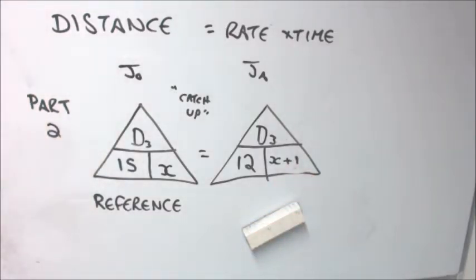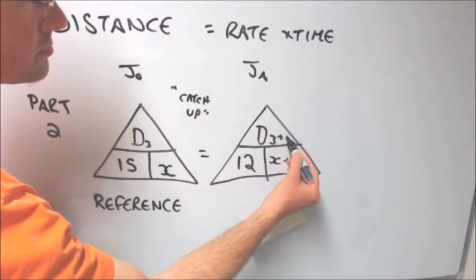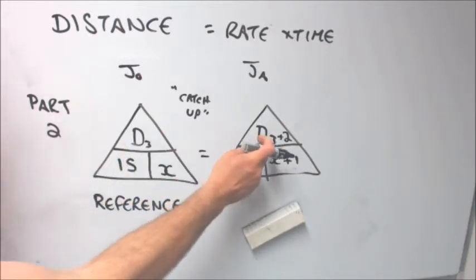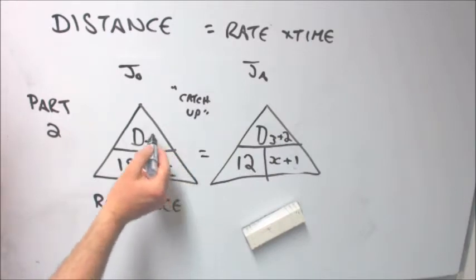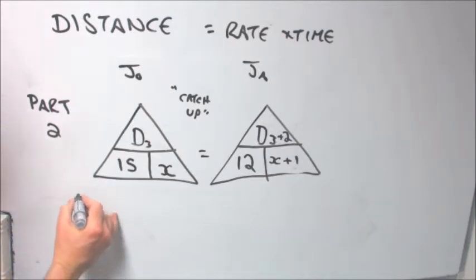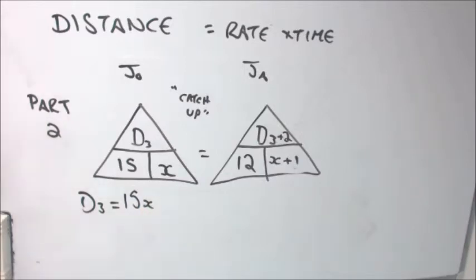He travels for, during part two of the story for one more hour and he's caught up those extra two miles and you must add that to the distance for part two. So the reference point, yes, is John, but we've divided the question into part one of the story and part two of the story. And that's the easiest way to handle this type of very high level on the GMAT type of question.